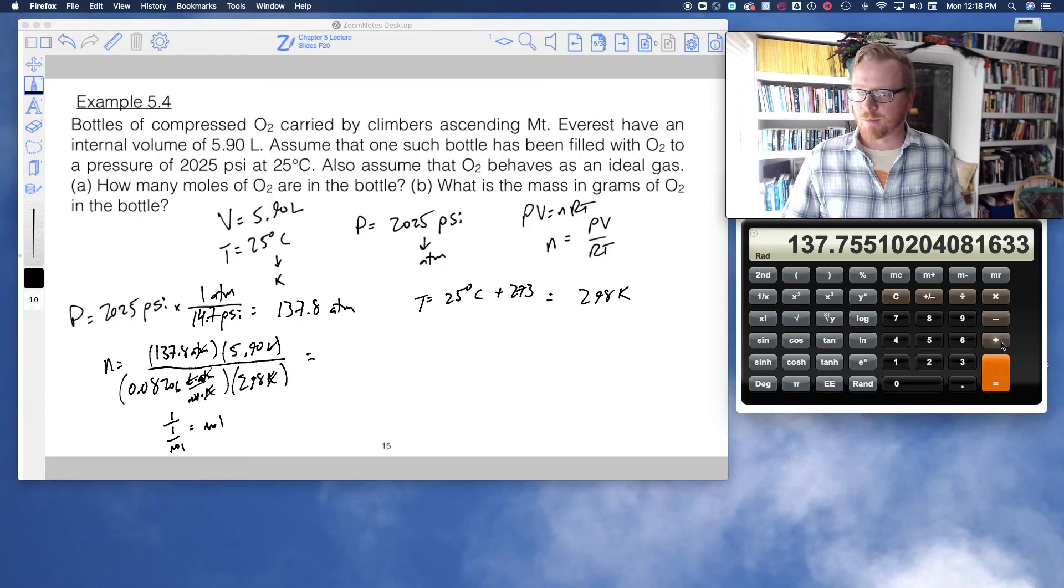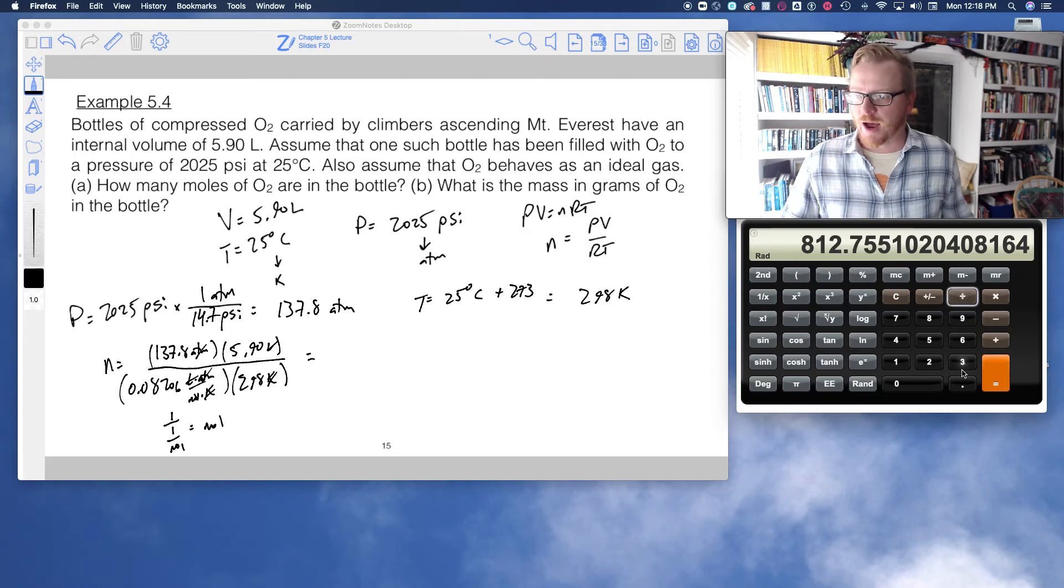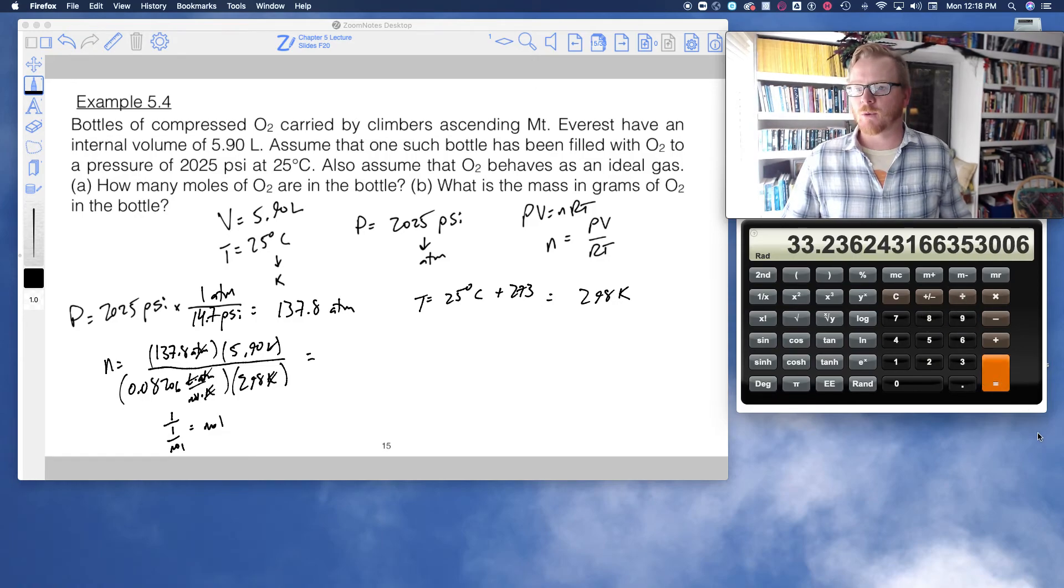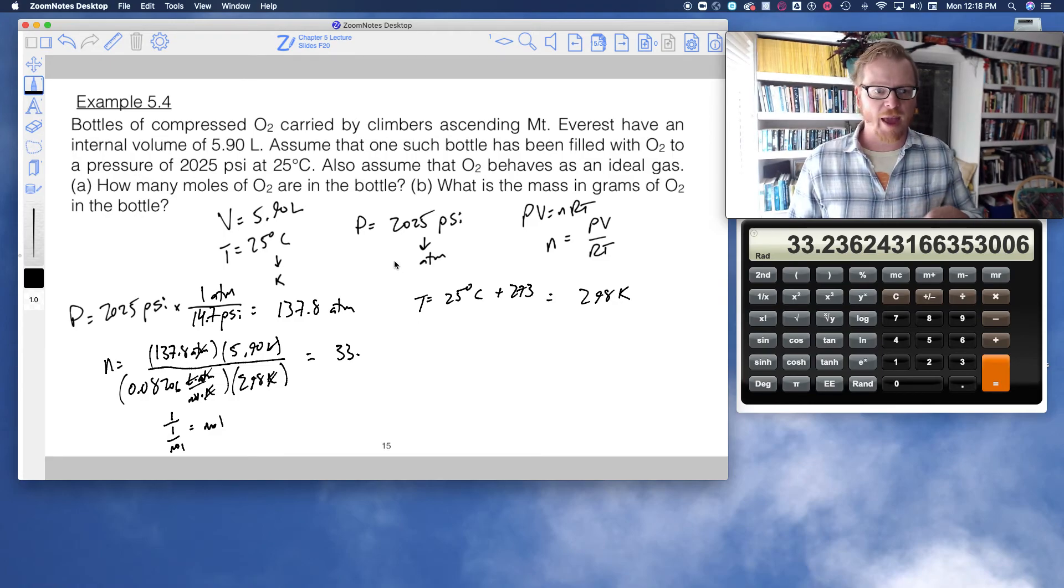So now I'm going to keep this number in my calculator because why not? That'll be more accurate. So now times 5.90 and then divided by 0.08206 and then divided by 298 equals. And that's quite a bit. We need quite a bit of oxygen up there on Mount Everest. So 33.2 moles of O2.